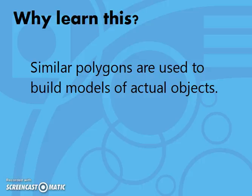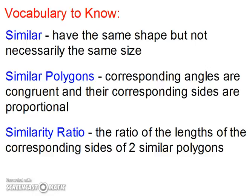Let's look at some vocabulary. Similar have the same shape, but not necessarily the same size. Similar polygons have corresponding angles that are congruent and their corresponding sides are proportional. A similarity ratio is the ratio of the lengths of the corresponding sides of two similar polygons.